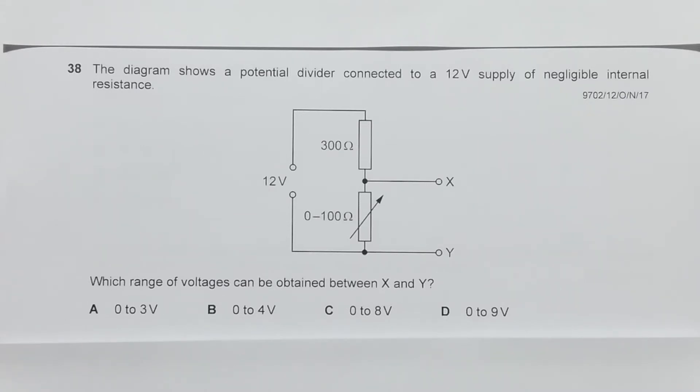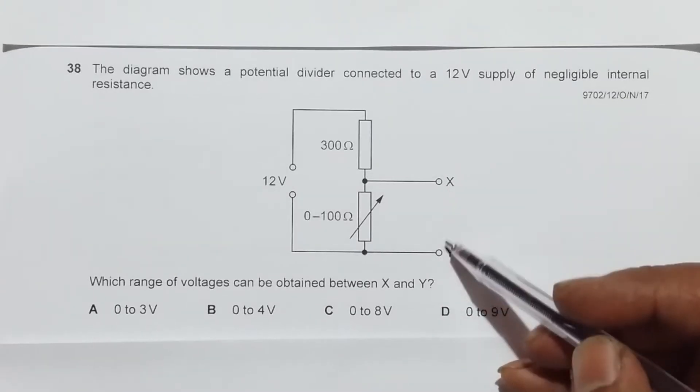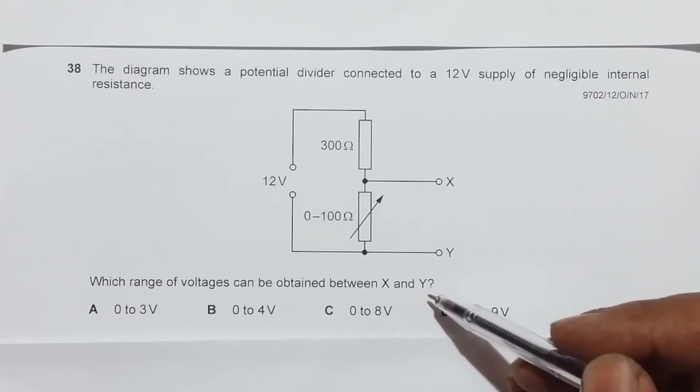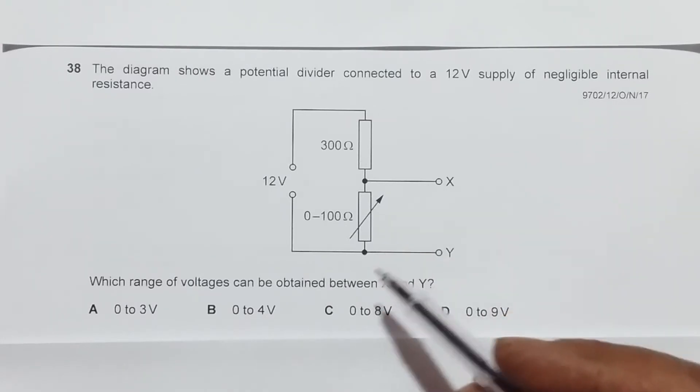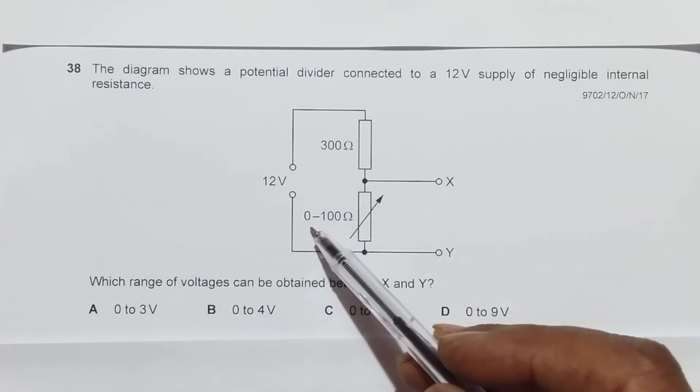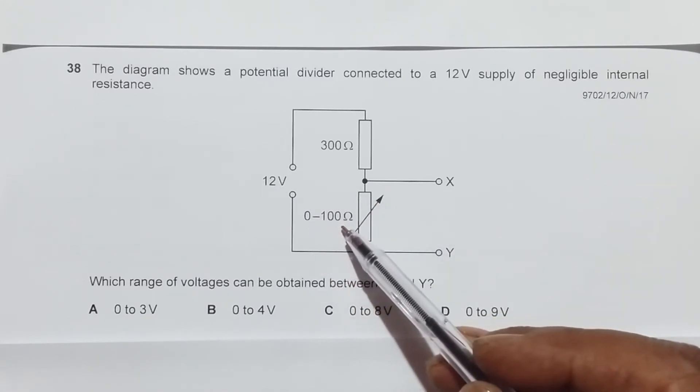It asks what range of voltages can be obtained between X and Y. The variable resistance can have a minimum value of zero ohm and a maximum value of 100 ohm.